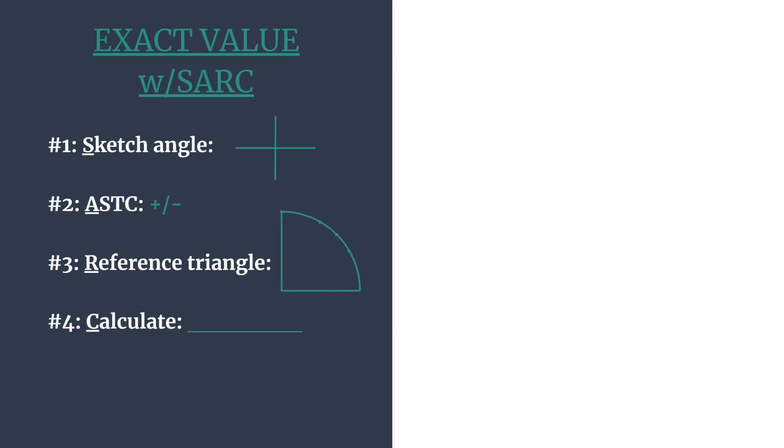So here's our outline. SARC helps us remember the order of the steps so we get an accurate answer. S stands for sketching the angle. A for ASTC, so we can decide if our answer should be positive or negative. R for the reference angle, special right triangle and coordinates that pair with it, and C for calculating the trig ratio.